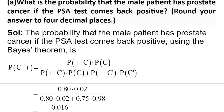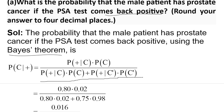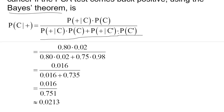In Part A, we need to calculate the conditional probability that a male patient has prostate cancer given that the test comes back positive. Here we need to use Bayes' theorem. Using Bayes' theorem, the conditional probability that the patient has cancer given that the test gives a positive result is computed by putting in the values. The probability that a male patient has prostate cancer given that the test gives a positive result is 0.0213.